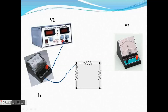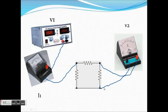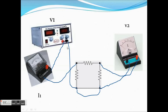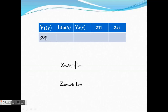Connect node 2 of the pi network to the positive terminal of the voltmeter and the negative terminal of the voltmeter to node 3 of the pi network. Connect node 3 and node 4 of the pi network, and node 4 to the negative terminal of RPS. Maintain V1 equal to 30 volts on the RPS. Note down the values of I1 and V2 in the table and find Z11 and Z21 for the practical values.